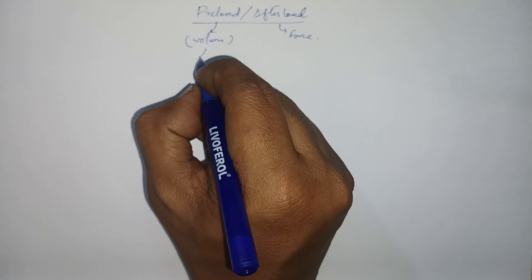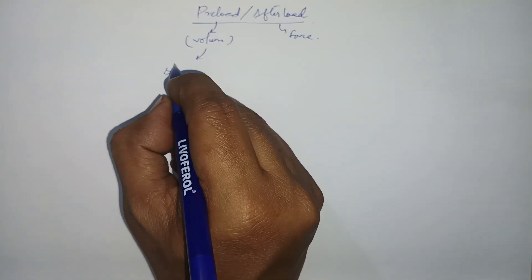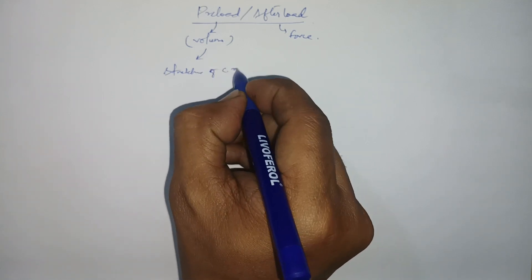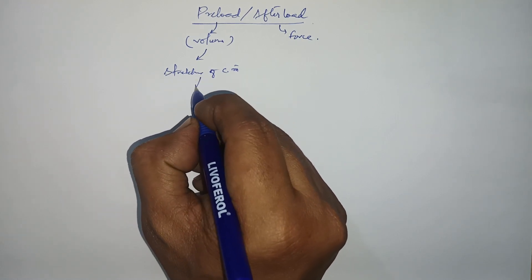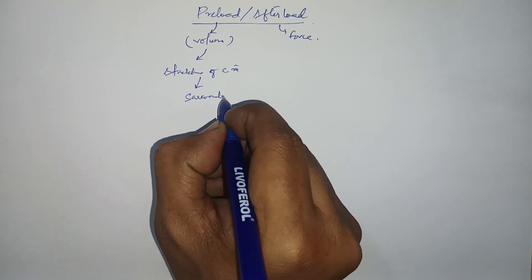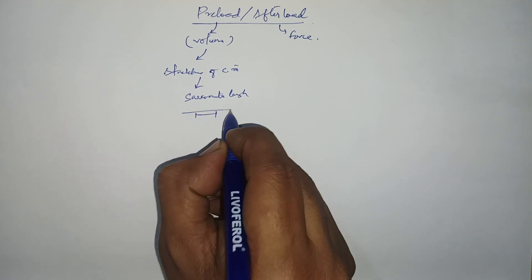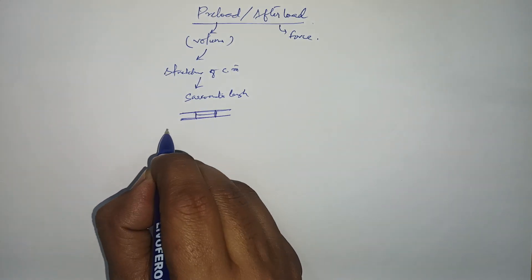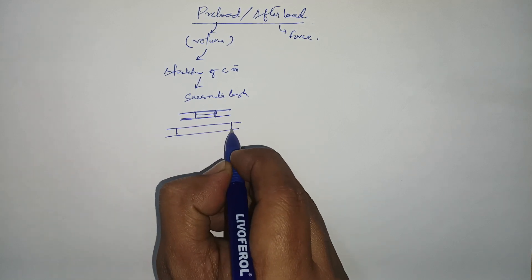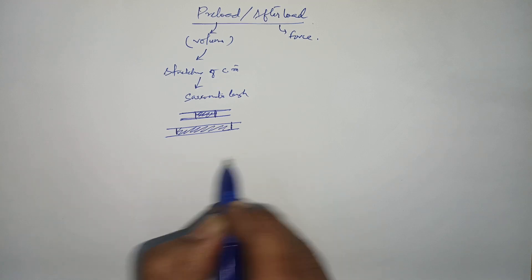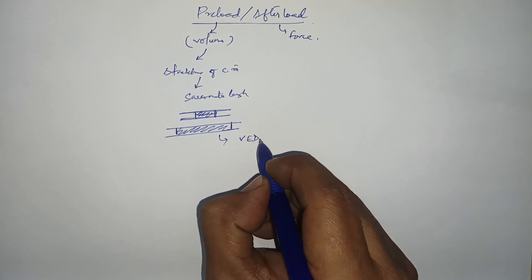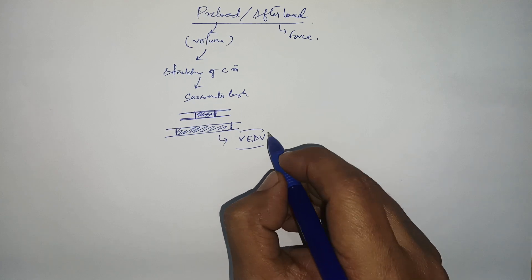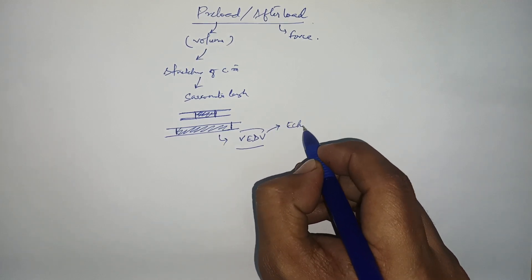How do you measure preload? Preload, as per definition, is the stretching of the cardiac myocyte. The cardiac myocyte stretch can be known with the help of sarcomere length. This is the normal sarcomere length in a cardiac myocyte, and whenever the myocyte is stretched, the sarcomere length will be longer. Now, you cannot ascertain the sarcomere length in an intact heart in a patient, so for that purpose we rely on another parameter called ventricular end-diastolic volume, which can be ascertained with the help of echocardiography.